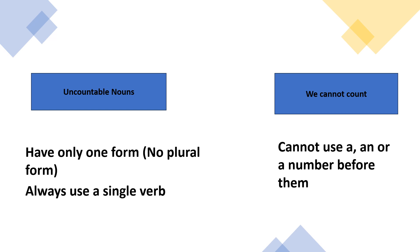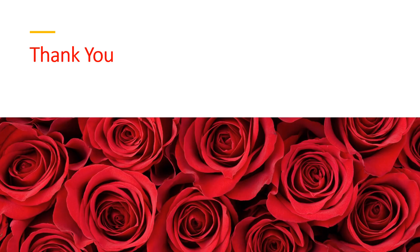Uncountable nouns have only one form. They don't have plural form. Always use a single verb, cannot use a plural verb, and it cannot use a or a number before them. Thank you for watching this video.